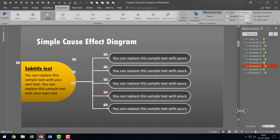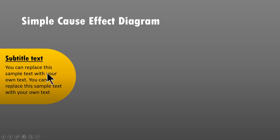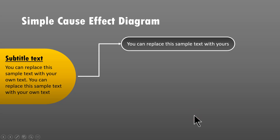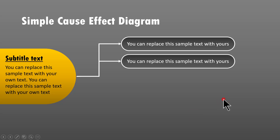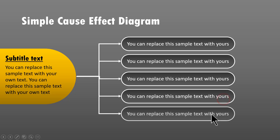Now if I go to Slide Show mode and see how the whole thing plays: on a click, I bring in the cause. I talk about the cause and then I talk about the five different effects — this is the first effect, the second effect, the third effect, the fourth effect, and the fifth effect. So that is how we create a simple cause effect diagram that comes in quite handy in a variety of situations.